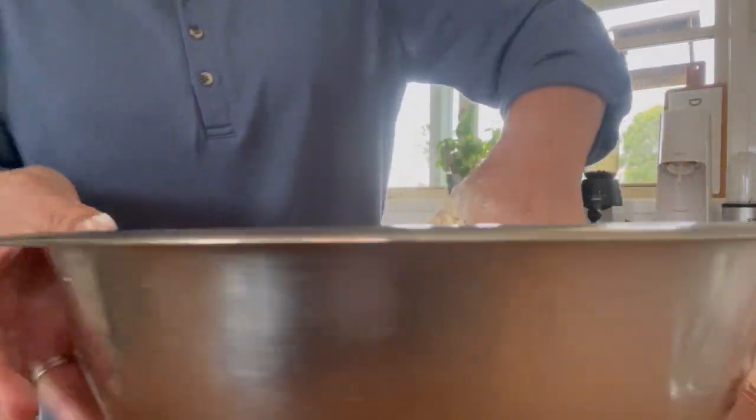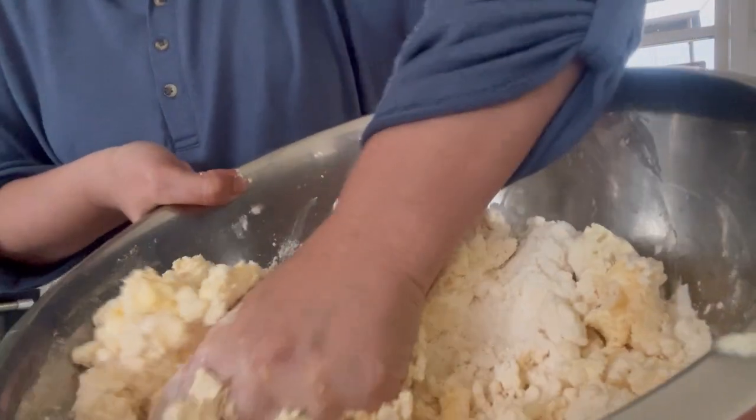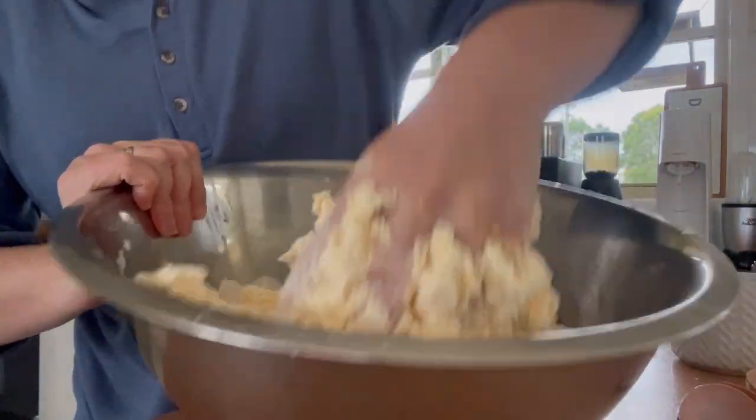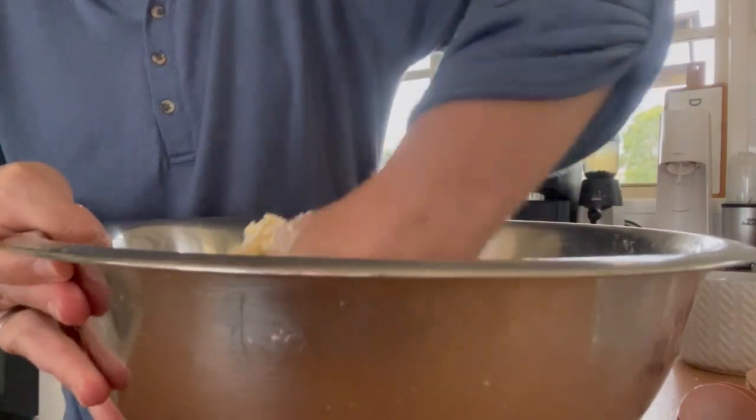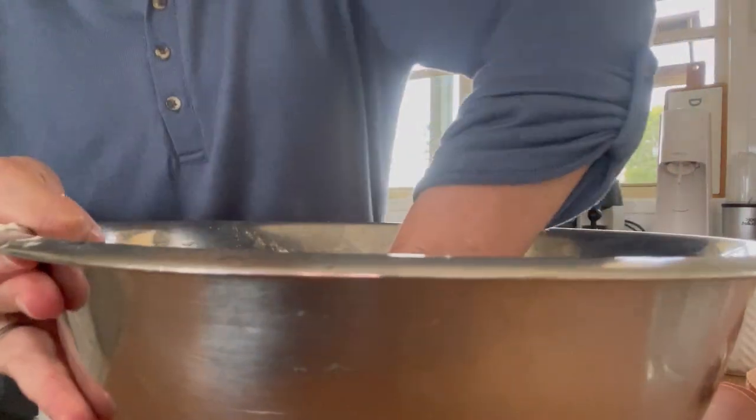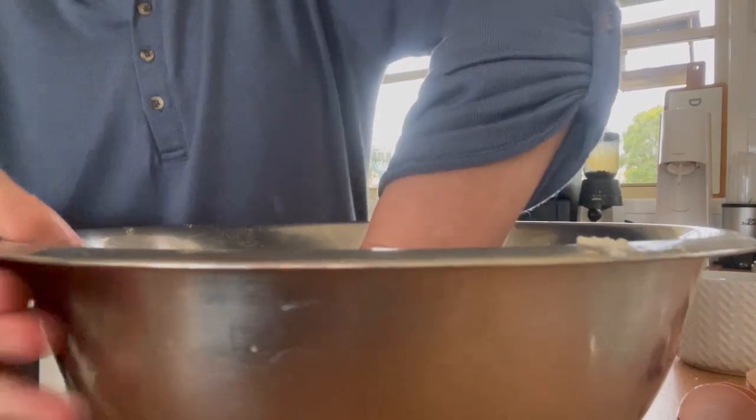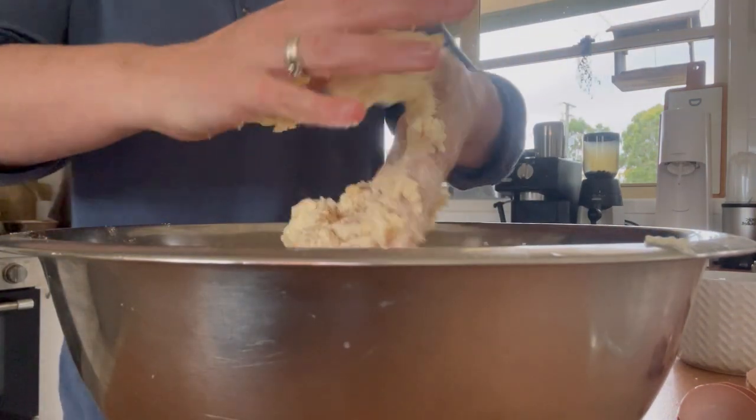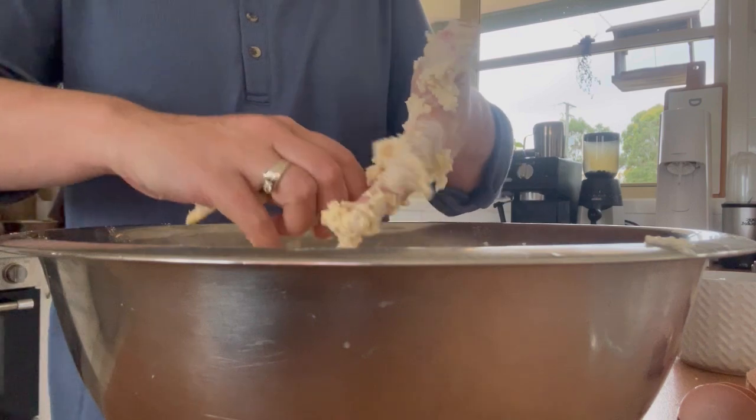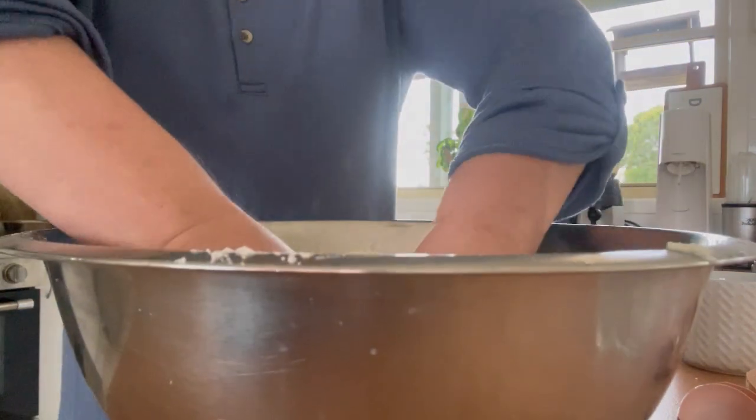If the dough is too sticky because you're using a wet ricotta, just add one tablespoon of flour at a time. I am kneading in the bowl. I don't want to add any unnecessary flour because you don't want the dough to become too dense.